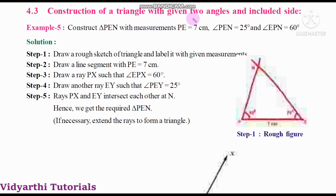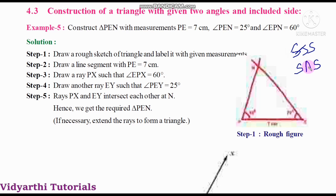Construction of a triangle with given two angles and included side. We are going to do a triangle construction. A triangle has three sides. We can also construct with two sides, or with two angles and an included side. When we use this exercise, we construct a triangle in the schools.